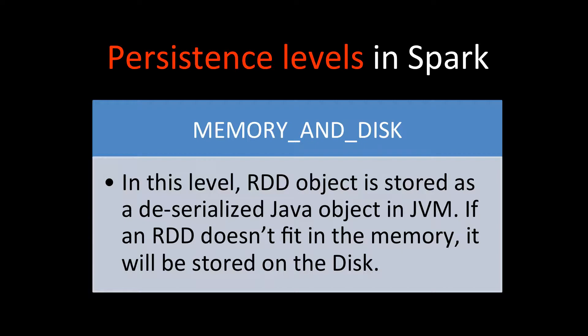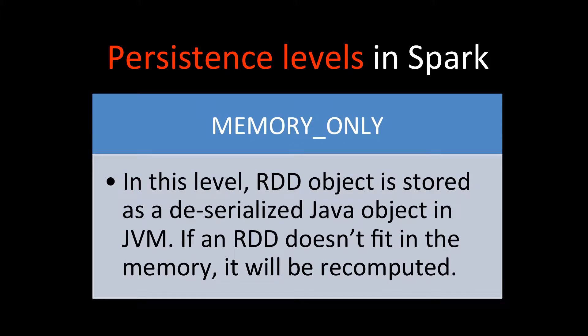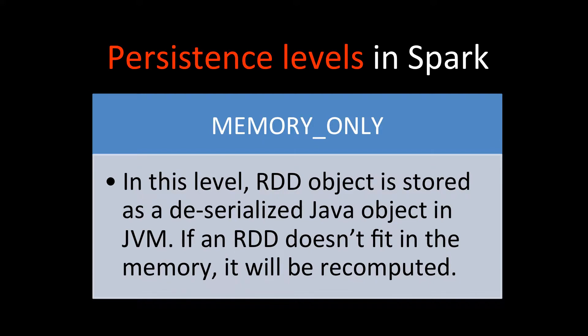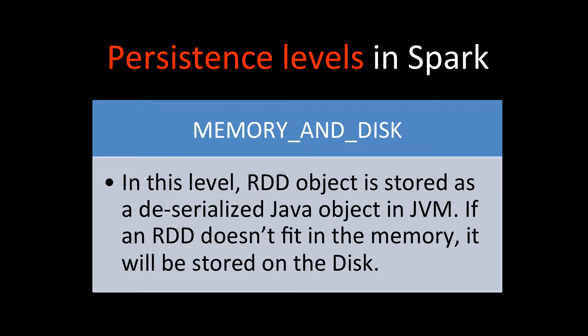Then we have memory and disk. In this case, the RDD object — the resilient distributed dataset — is stored as a deserialized Java object in JVM. If the RDD doesn't fit in memory, then it will also be stored on disk. So whenever something doesn't fit in memory, we store it on disk. This is the key difference: with memory only, if it doesn't fit, we recompute; but with memory and disk, if it doesn't fit, it goes to disk.